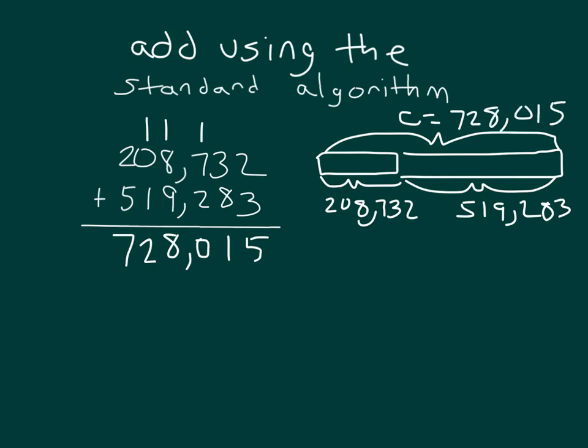Read the whole problem with me. Two hundred eight thousand seven hundred thirty-two, plus five hundred nineteen thousand two hundred eighty-three, equals seven hundred twenty-eight thousand fifteen.